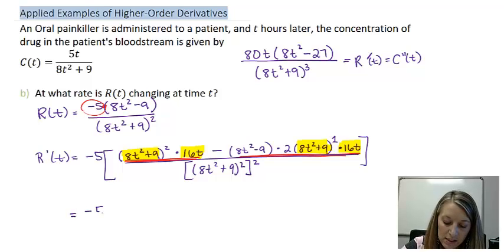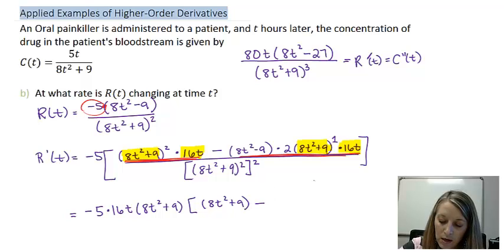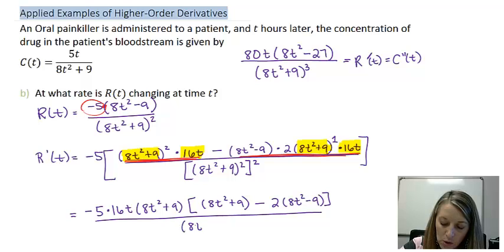So my negative 5 stays, I take out a 16t, and I take out an 8t squared plus 9. In my first unit, I'm left with one of those 8t squared plus 9. In my second unit, I'm left with two times 8t squared minus 9. And that is all over this 8t squared plus 9 to the fourth when I multiply my exponents.